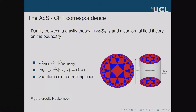The ADS/CFT correspondence is a duality between a quantum gravity theory living in anti-de Sitter space — a maximally symmetric space with constant negative curvature, shown in the bulk of this picture — and a conformal field theory on the boundary. By 'duality,' every state in the bulk maps to some state on the boundary and vice versa. If you take local operators living somewhere in the bulk and take the limit of those operators as the radial coordinate goes to infinity, those bulk operators are equal to local boundary operators.